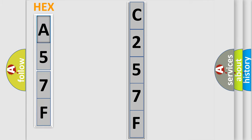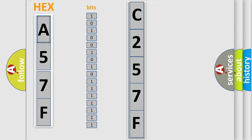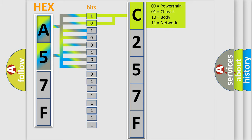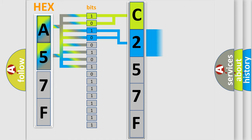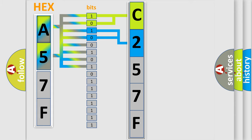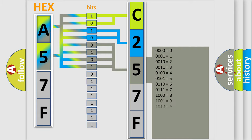The error code is split into two bytes consisting of 16 bits. One bit is the basic unit that each computer works with. The bit has two logical states: zero, low level, and one, high level. By combining the first two bits, the basic character of the error code is expressed. The next two bits determine the second character. The last bits of the first byte define the third character of the code.